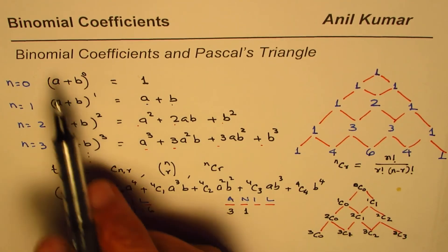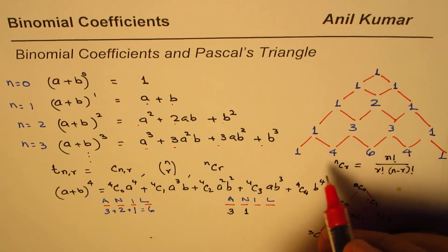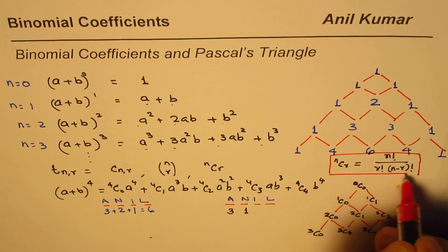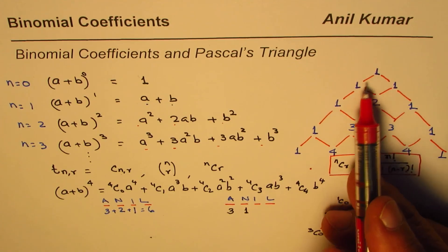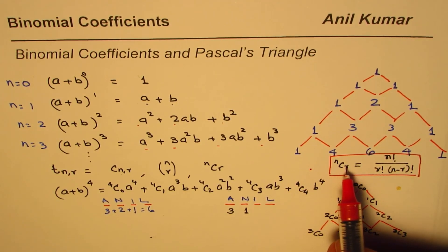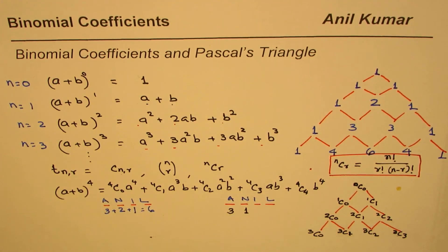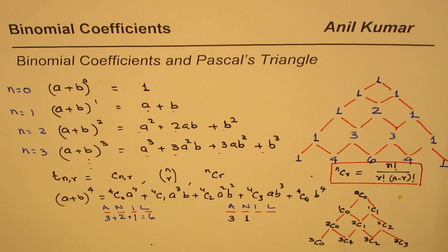What we have done here is link binomial coefficients to Pascal's triangle with great significance. Now we have the formula nCr, so if I need to know a combination — say 5C1 — I can use the formula directly without building up from the top of the triangle. We'll summarize these learnings in the next video with a few more examples. I hope this gives you a good introduction to linking binomial coefficients with Pascal's triangle. I'm Anil Kumar — you can subscribe and share my videos. Thank you and all the best!